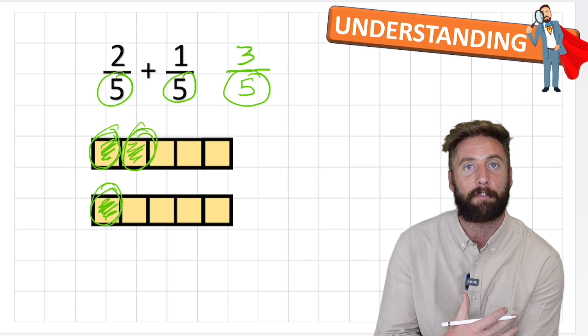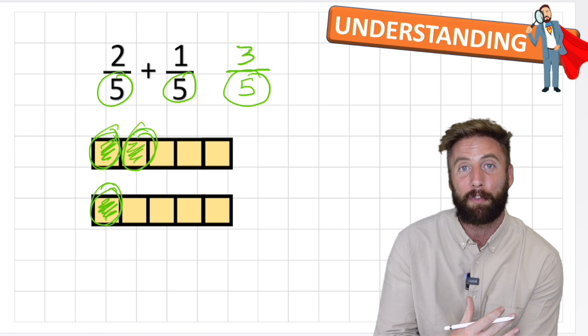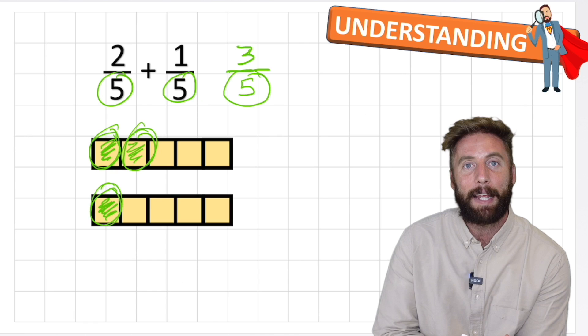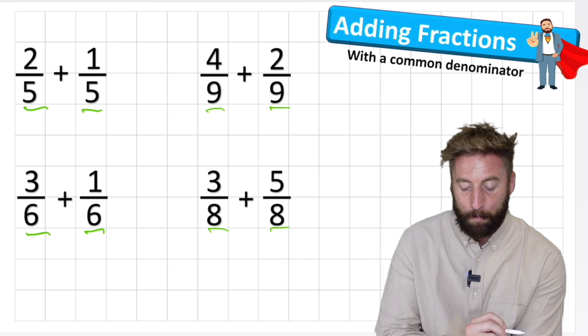The denominator - the number at the bottom - is basically the name of the fraction: are we working in thirds, fifths, eighths? That will not change when we add fractions together. If I add two fifths to one fifth I get three fifths. So I keep the denominator the same when I add - I only add the numerator.